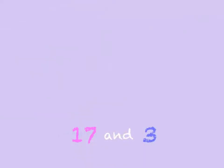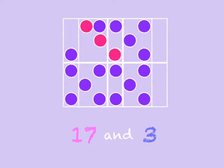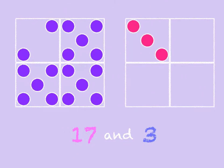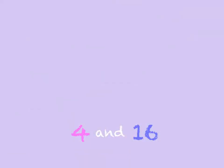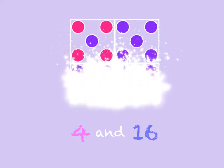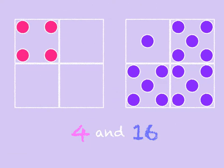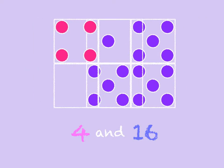Seventeen and three. Seventeen and three make 20. Four and sixteen. Four and sixteen make 20.